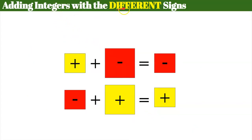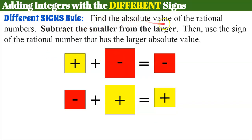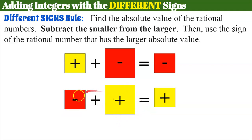Now let's talk about adding rational numbers with different signs. We're going to find the absolute value of the rational numbers, subtract the smaller from the larger, and then use the sign of the rational number with the larger absolute value — same as our integer rule. If I have a smaller positive and a larger negative absolute value, the result is negative. A negative is never larger than a positive; we're talking about absolute value. Our sum is dictated by the larger absolute value.